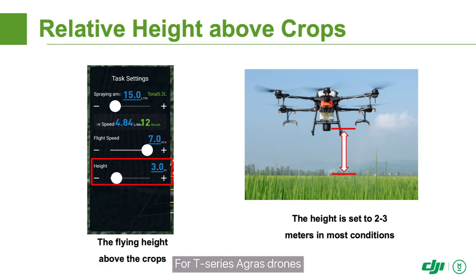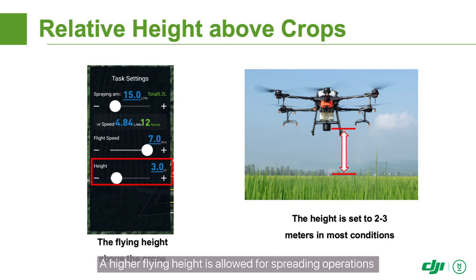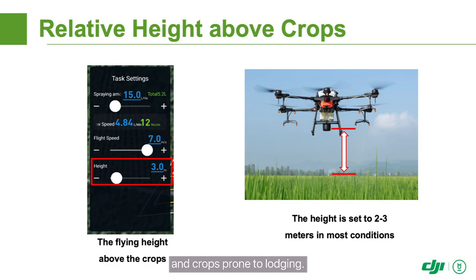For T-Series Agri-drones, a height of 2–3 meters is generally recommended. A higher flying height is allowed for spreading operations and crops prone to lodging.